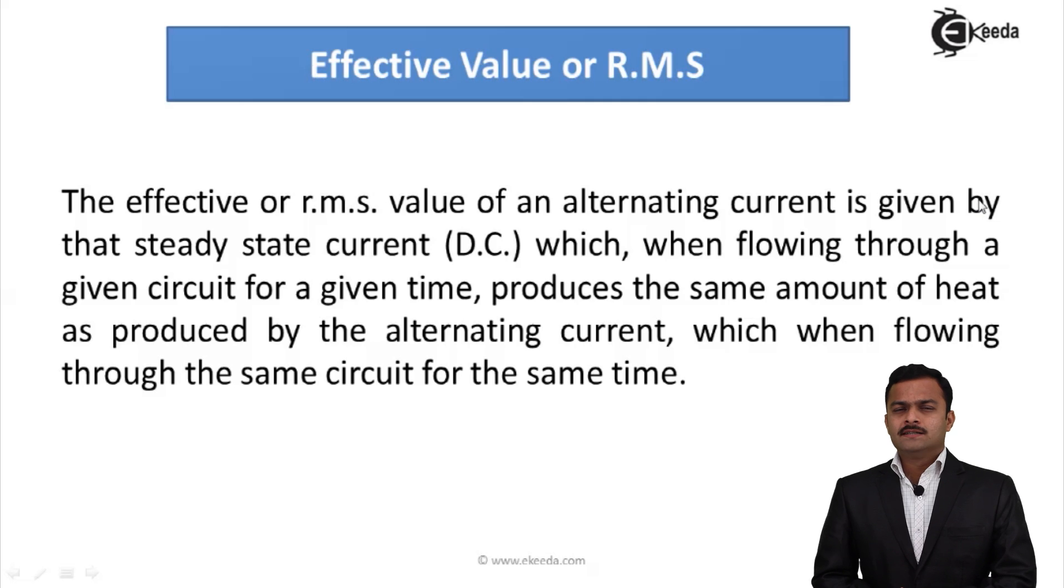Meaning, suppose I perform an experiment where I connect a DC supply to a lamp and measure the power by passing a DC current for some amount of time. Now, instead of DC, I will replace AC and check the same effect for the same amount of time. The moment I get the same effect, that value of AC I noted down, which is nothing but the RMS value.